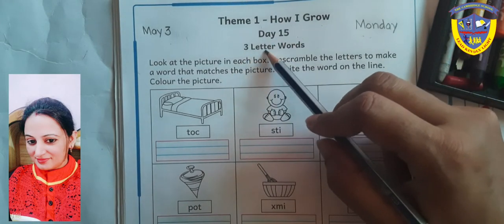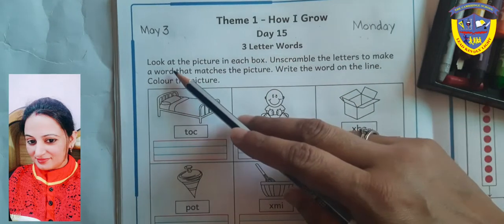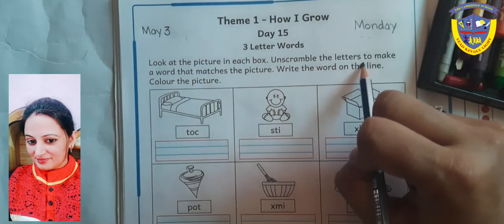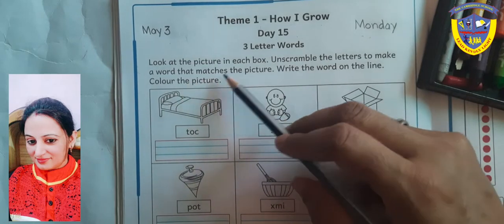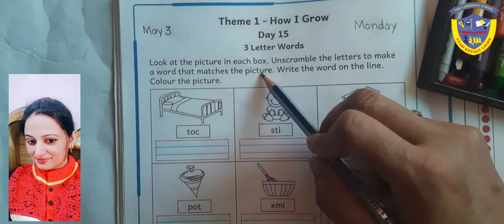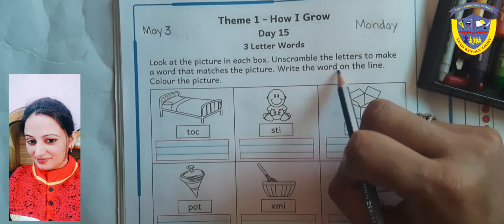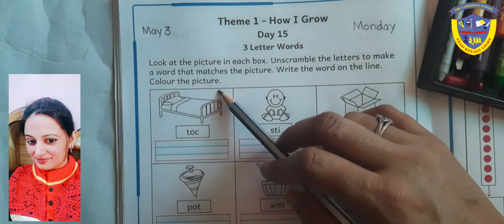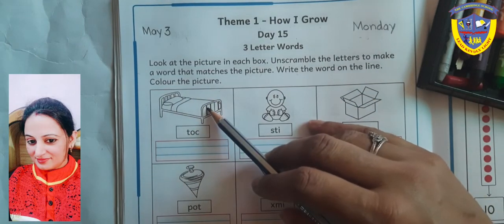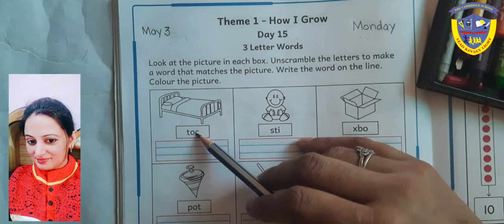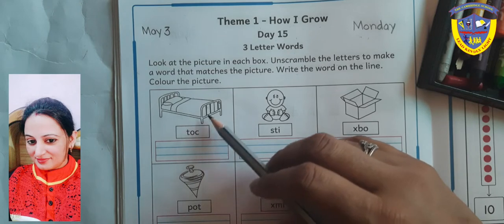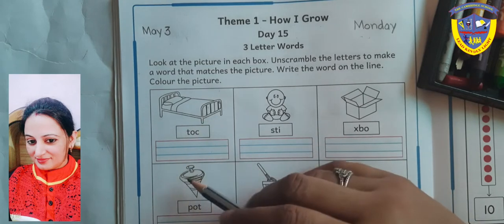Today we are going to do 3-letter words. Look at the picture in each box. Unscramble the letters to make a word that matches the picture. Write the word on the line. After that, color the picture. First identify the picture, then unscramble the letters, after that write the word, then color the picture.